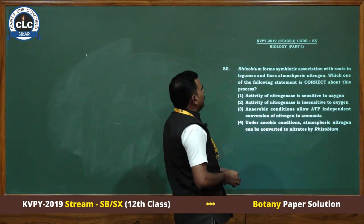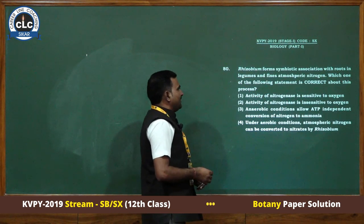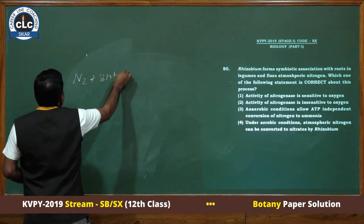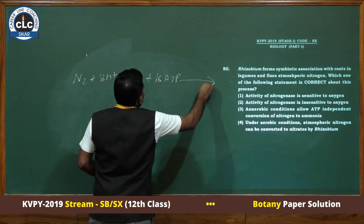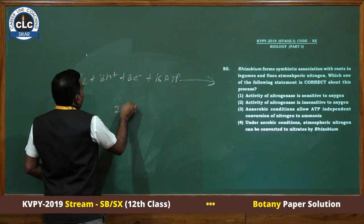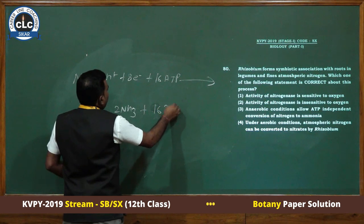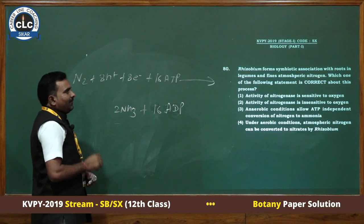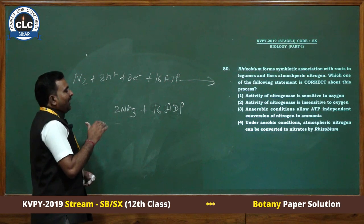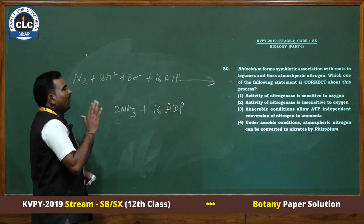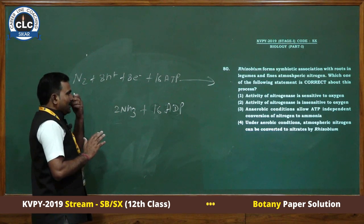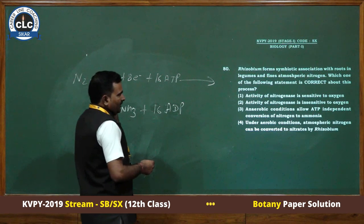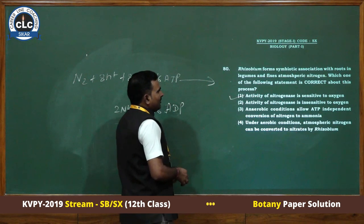Rhizobium forms a symbiotic association with roots in legumes and fixes atmospheric nitrogen. In the presence of enzyme nitrogenase, it converts nitrogen to two molecules of ammonia, consuming 16 ATP and producing 16 ADP. Nitrogenase is an oxygen-sensitive enzyme. In Rhizobium-legume symbiosis, leghemoglobin protects the nitrogenase from oxygen — it is an oxygen scavenger. In BGA, heterocysts protect the nitrogenase from oxygen. According to this question, the answer is first: activity of nitrogenase is sensitive to oxygen.